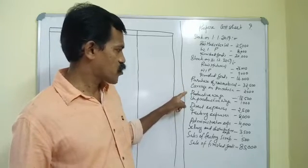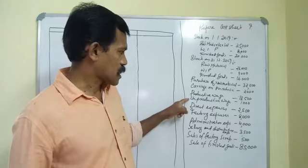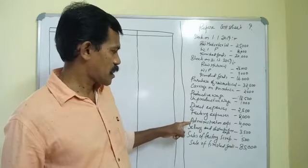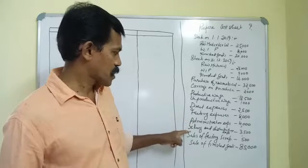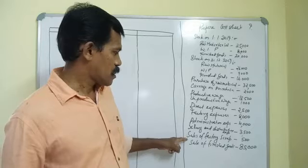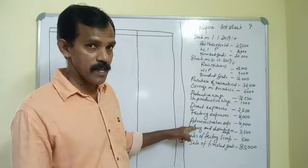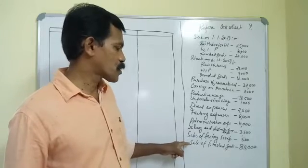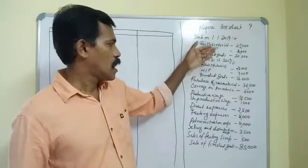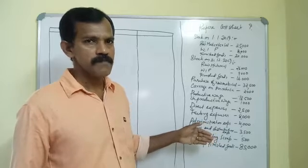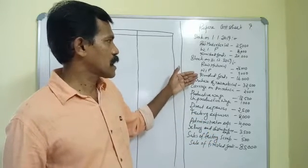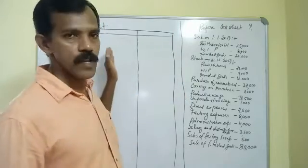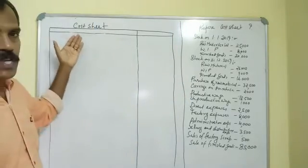Then we have production wage, unproductive wage, direct expenses, factory expenses, administration expenses, selling and distribution expenses, and sale of factory scrap. We have already discussed about sale of factory scrap and these things in our cost sheet format. On the right side of the cost sheet in our official format we have two columns; here I am providing only one column because the units to be produced are not given.